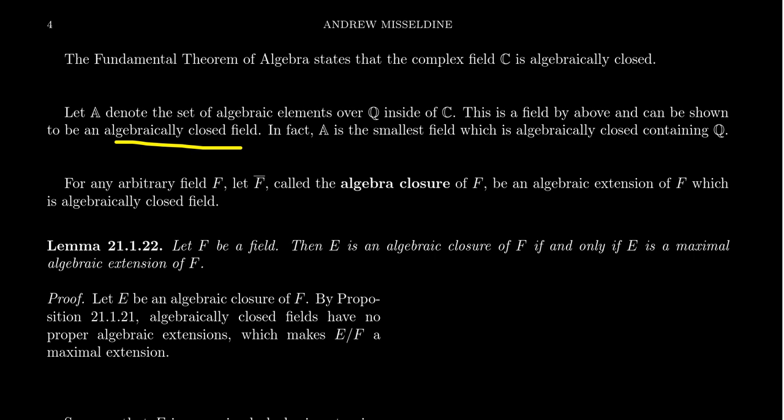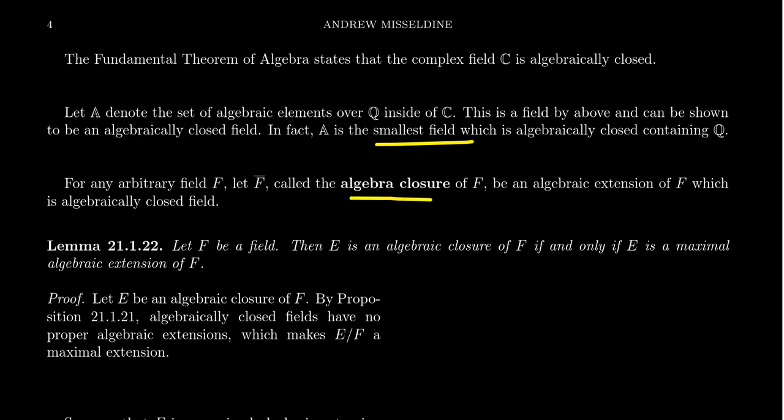This field A is in fact algebraically closed as well, and it's commonly referred to as the field of algebraic numbers. This is in fact the smallest field which contains Q and is algebraically closed. What we want to do in this video is talk about this idea of being the smallest algebraically closed field, which leads to the notion of the algebraic closure of Q.